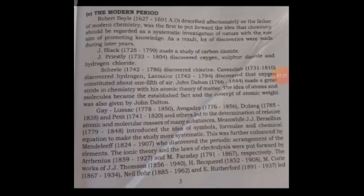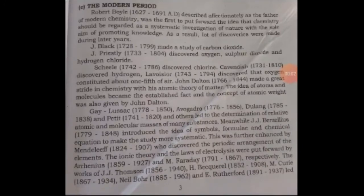Cavendish discovered hydrogen. Lavoisier discovered that oxygen constituted about one-fifth of air. John Dalton made a great stride in chemistry with his atomic theory of matter. He explained that an atom is a tiny particle of matter, and the concept of atomic weight was given by John Dalton. He also introduced the idea of symbols, formulae and chemical equations to make the study more systematic.